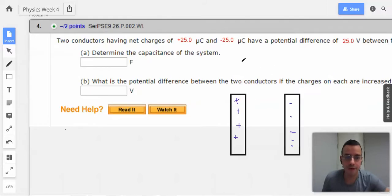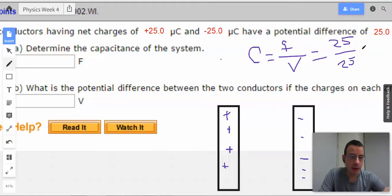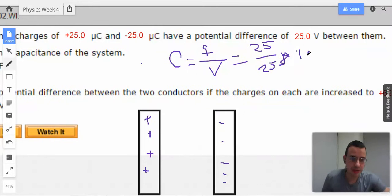And therefore, capacitance measured in farads will be, this is going to be easy, Q over V, which equals 25 over 25, and I'm going to write it as times 10 to the negative 6. This will be measured in farads. These cancel, and we get 1 times 10 to the negative 6.